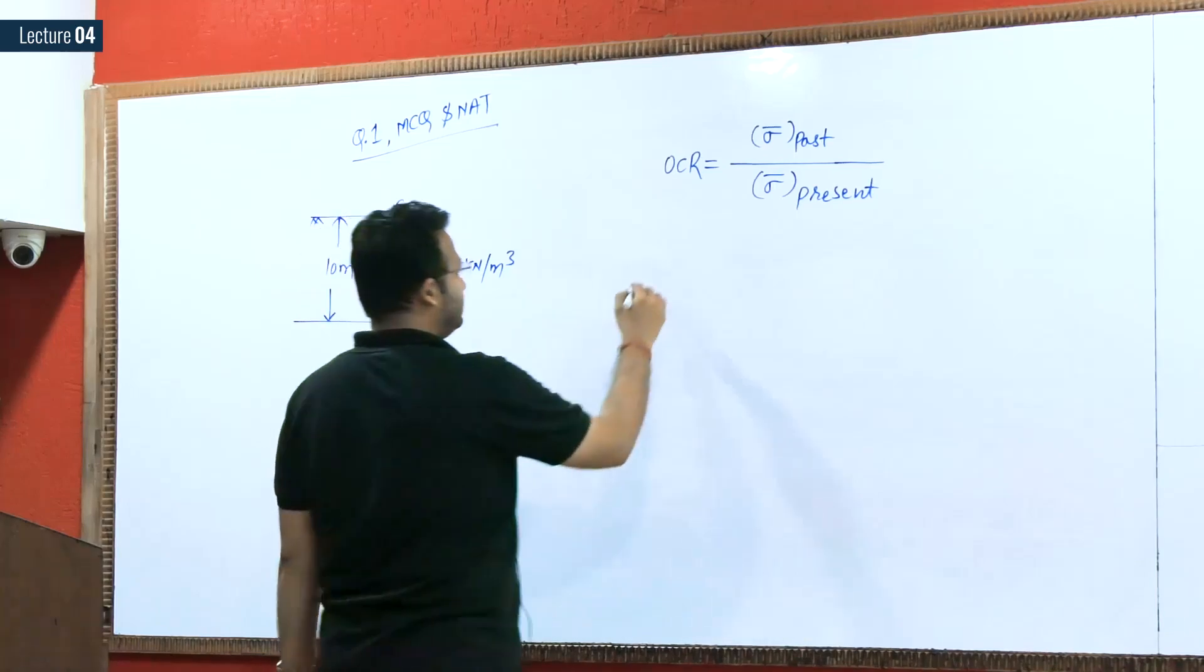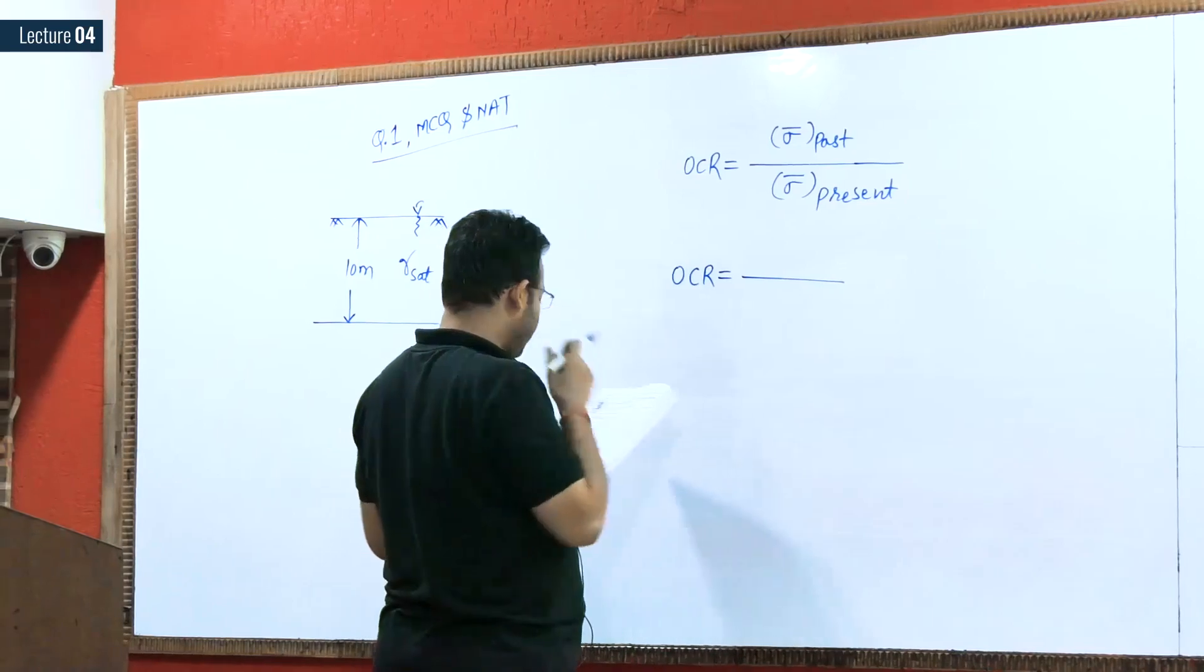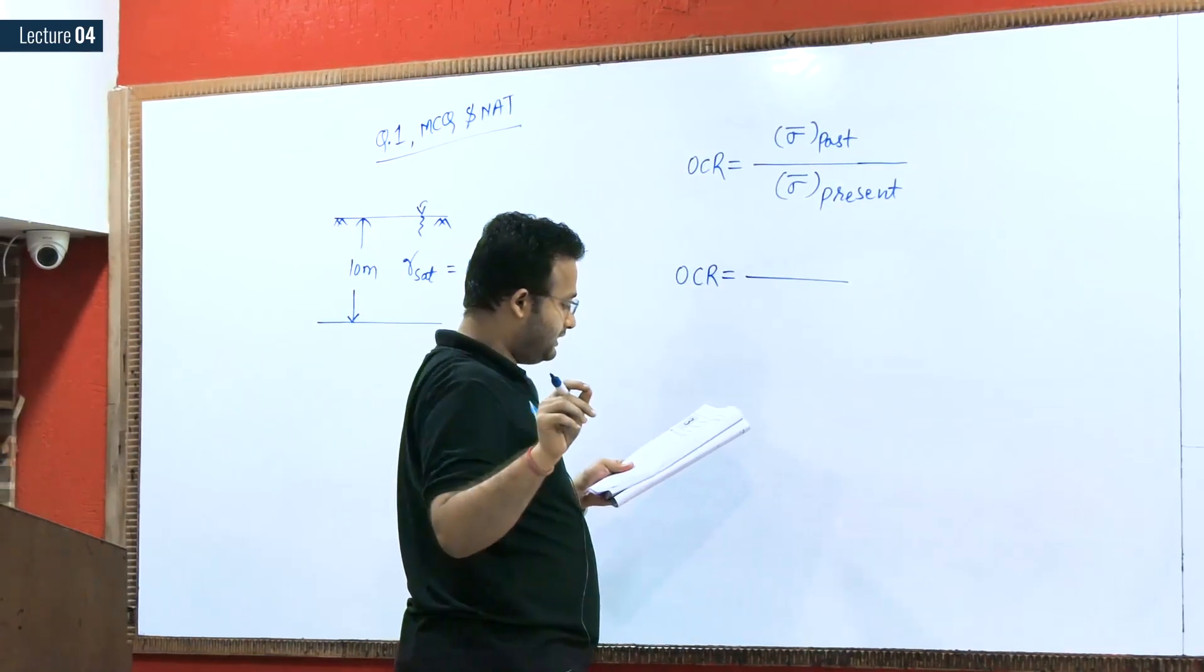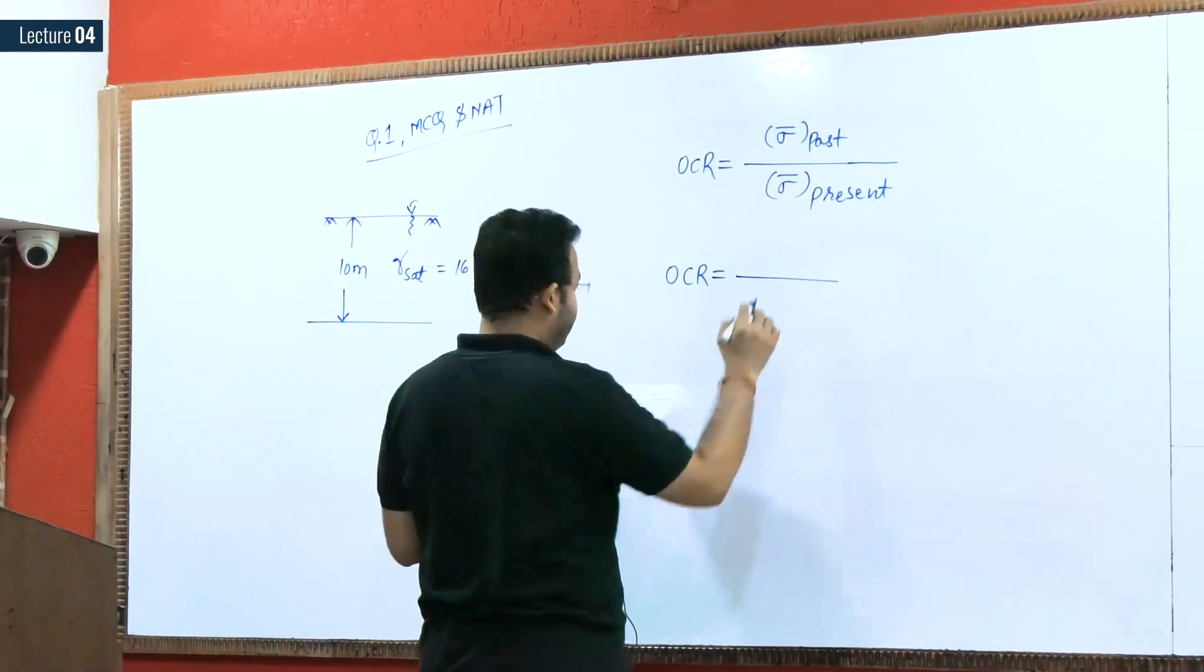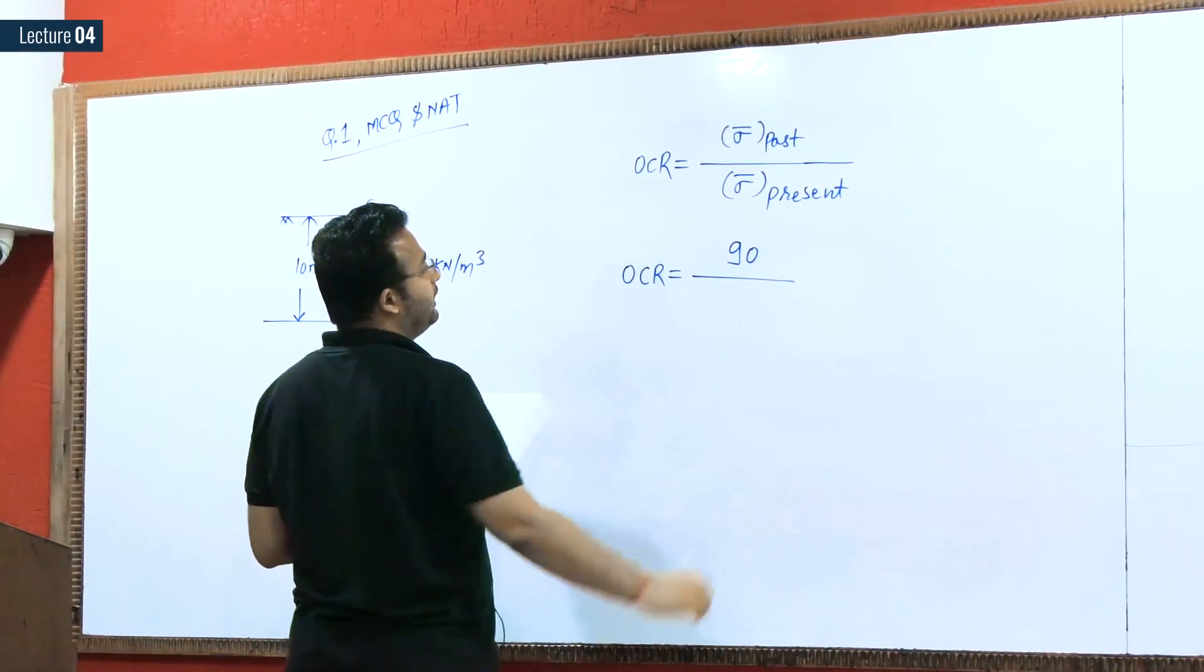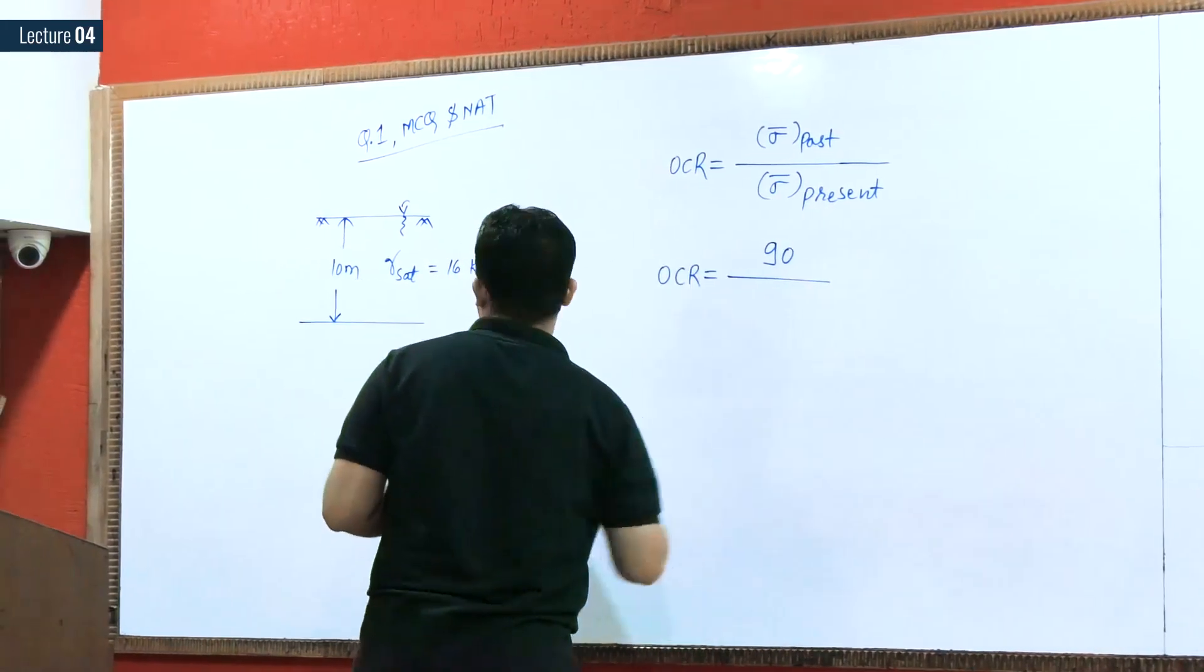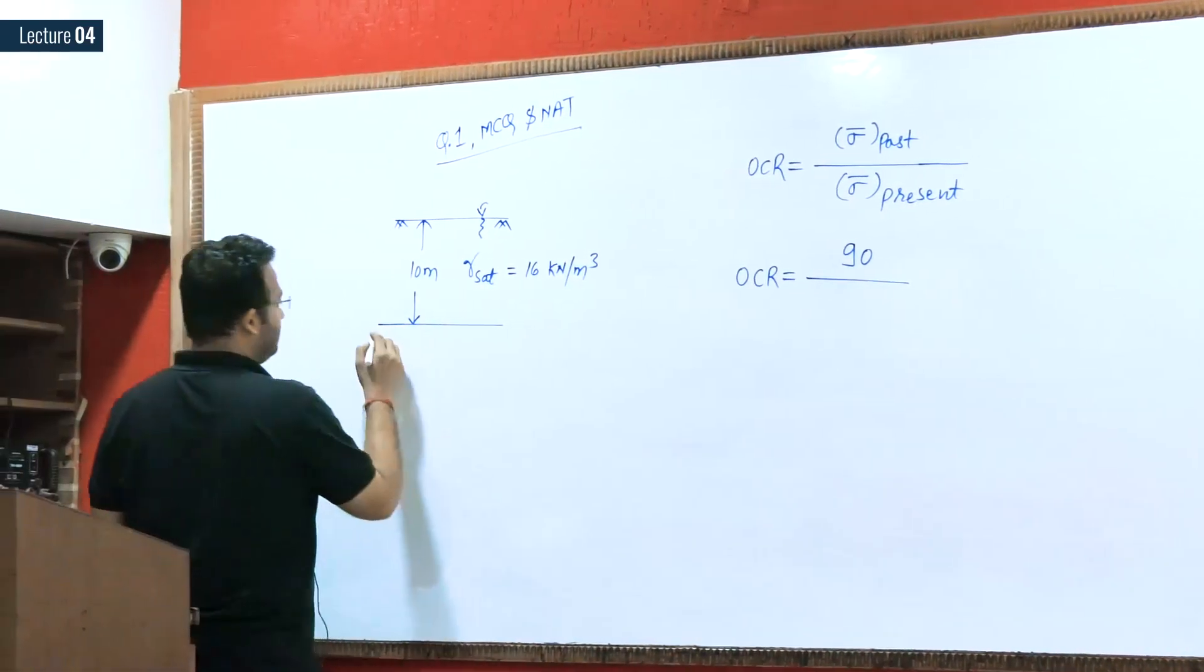This is actually the meaning of OCR. In the past condition, we have been given the value of pre-consolidation pressure which is 90 kPa. So we have written here 90 kPa.